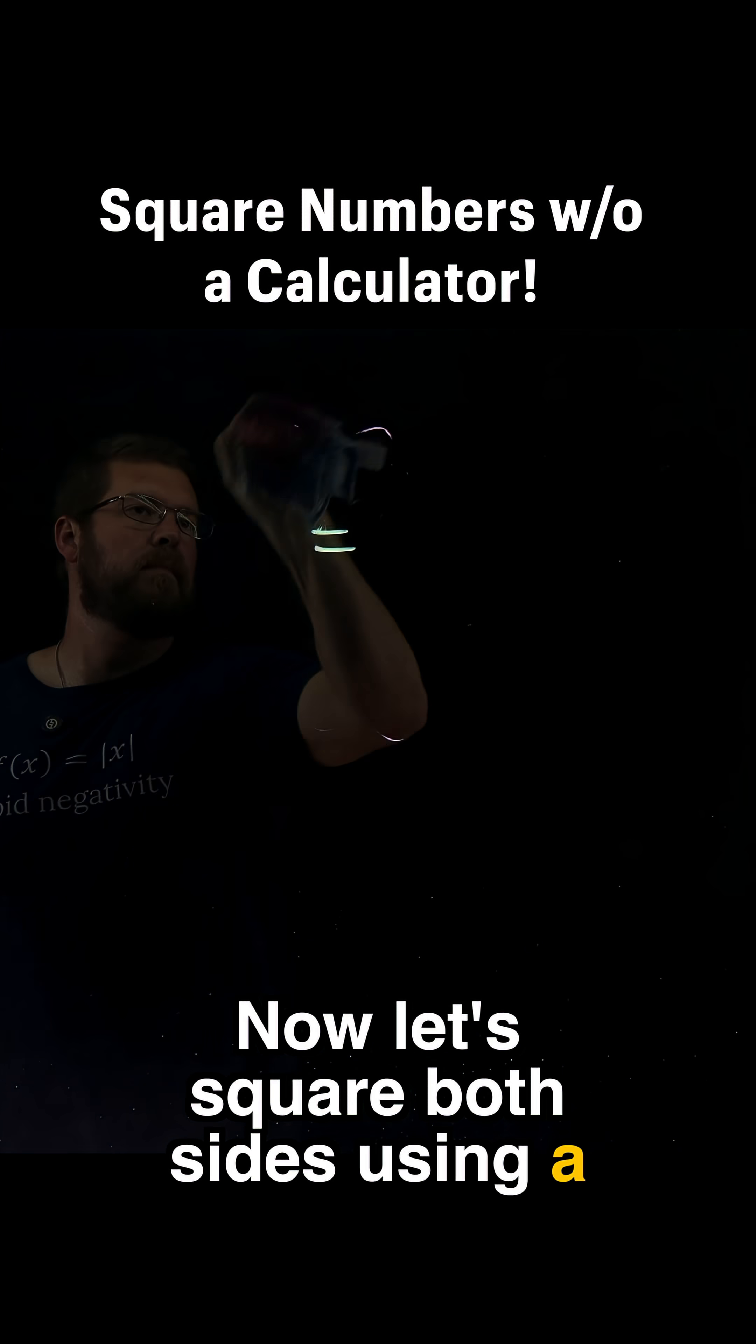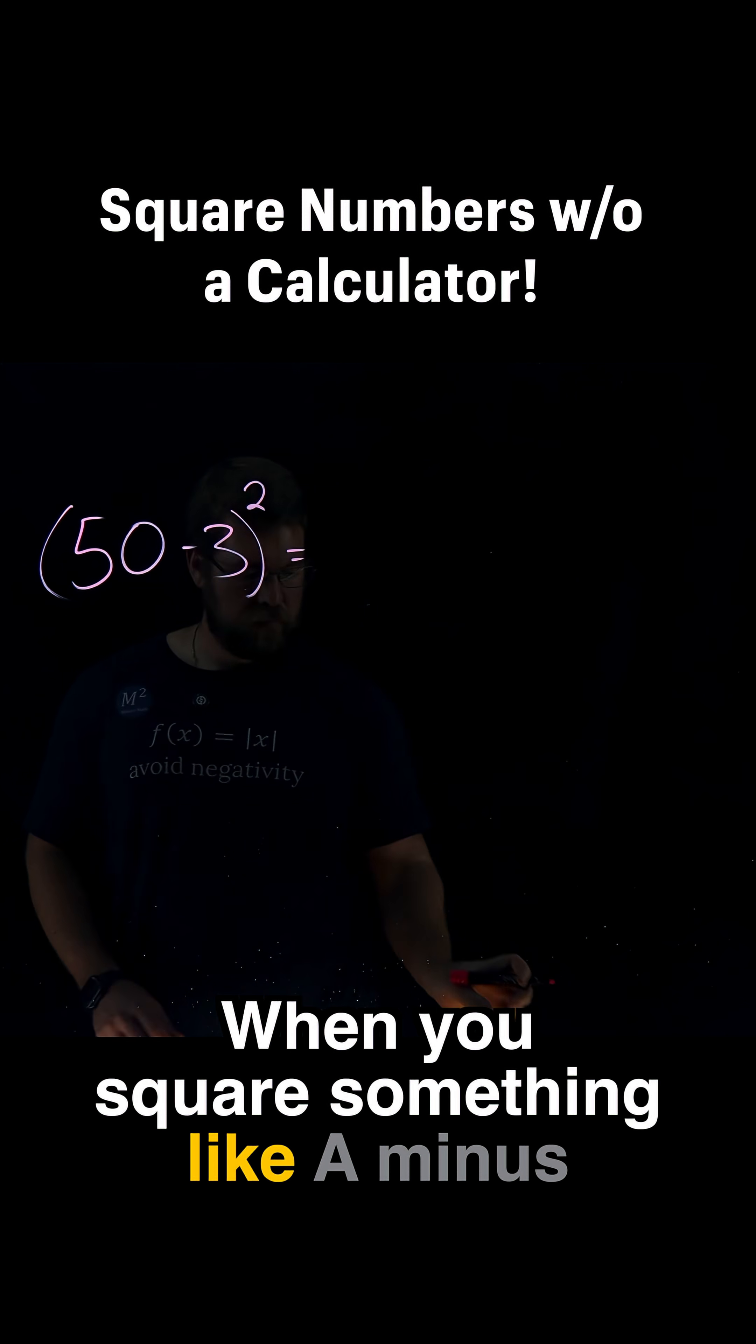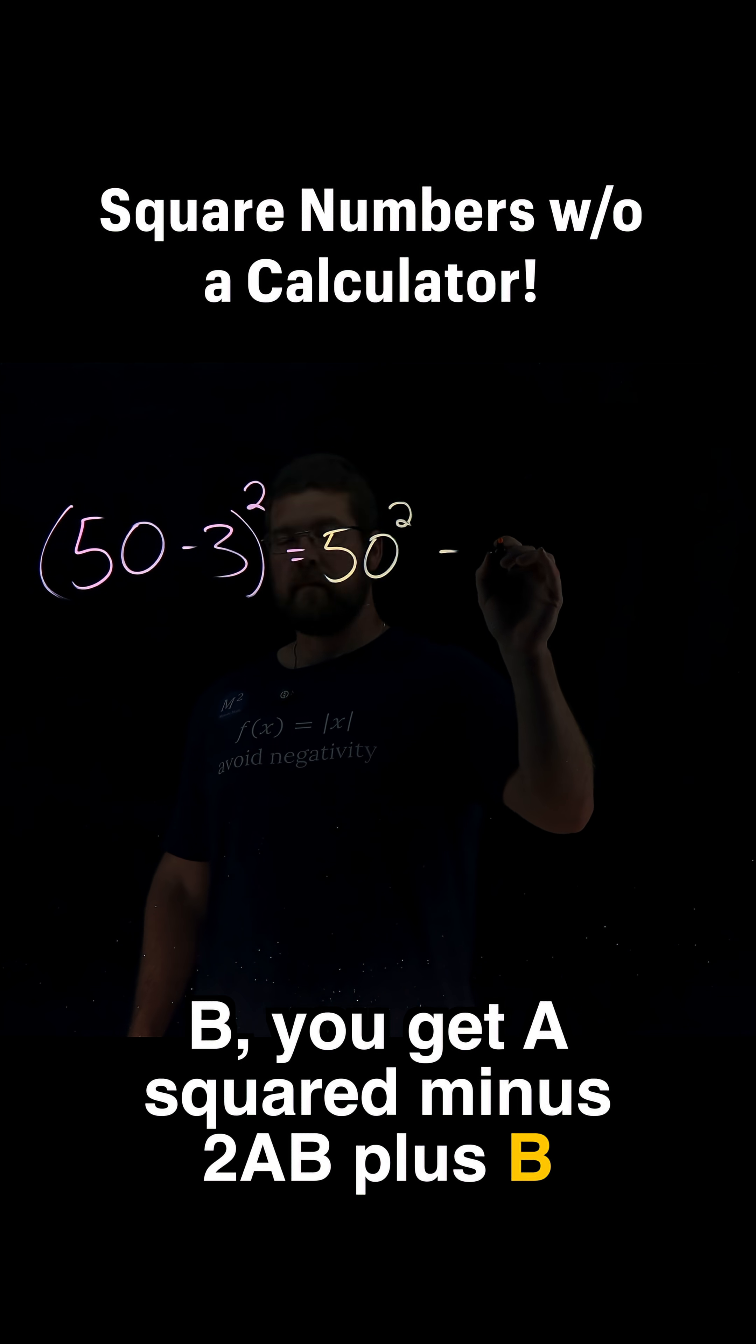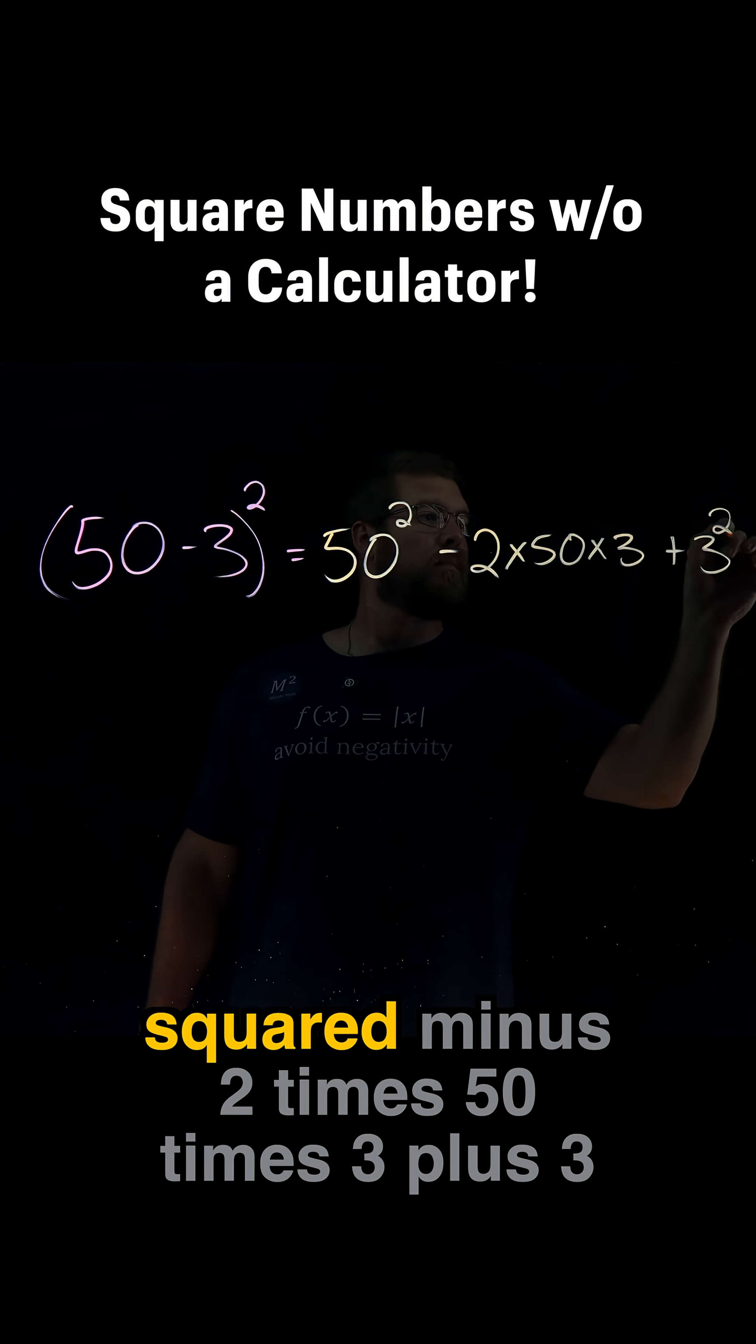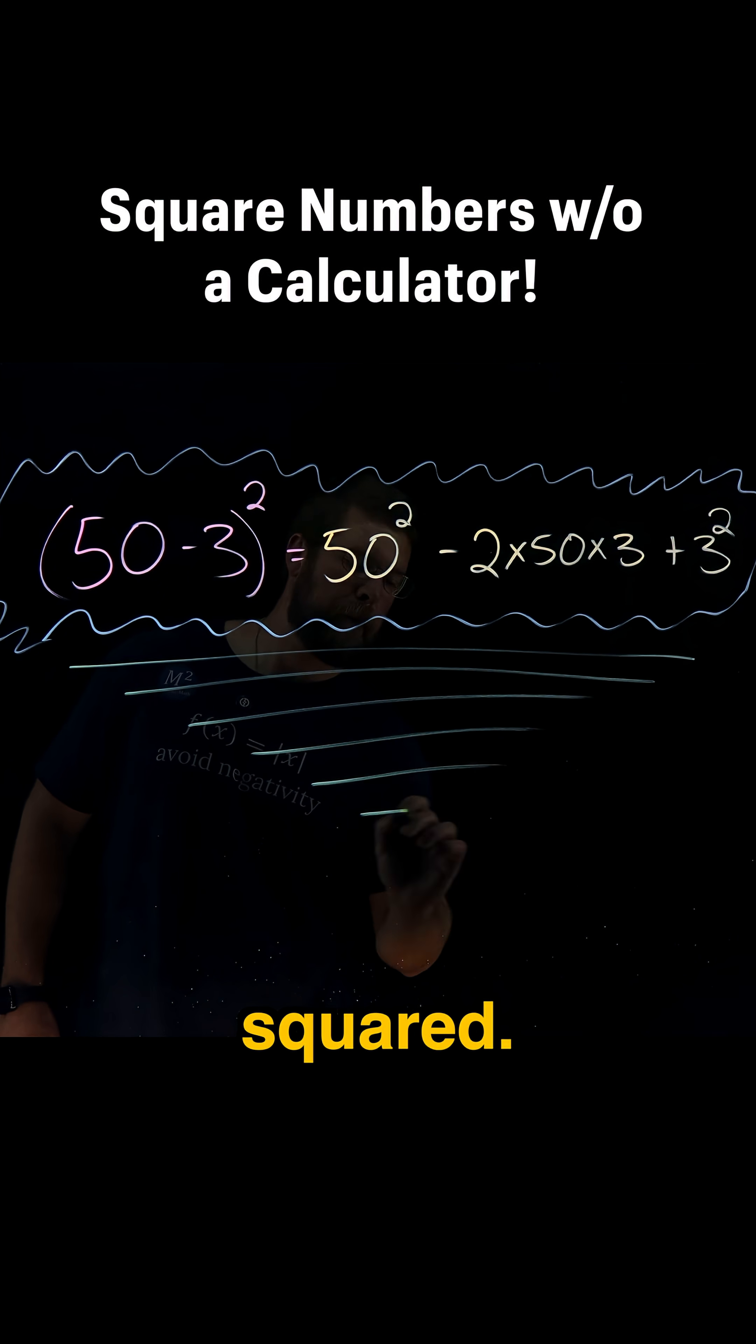Now let's square both sides using a simple expansion rule. When you square something like a minus b, you get a squared minus 2ab plus b squared. So in this case, it becomes 50 squared minus 2 times 50 times 3 plus 3 squared.